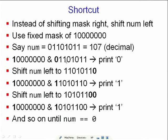The first masking action ANDs 1-followed-by-all-zeros with the number — leftmost bits are 1 and 0, whose AND is 0, so we print a 0. Then shift the number left: from 01101... it becomes 1101011 with a 0 padded from the right. This time the AND with the fixed mask gives a 1 in the leftmost position, which is nonzero, so we print a 1. The digits printed are exactly the binary representation of 107.